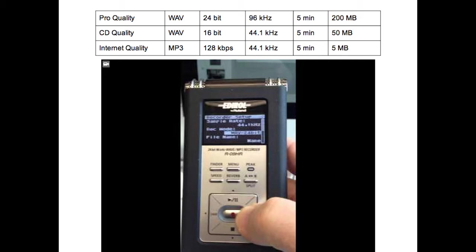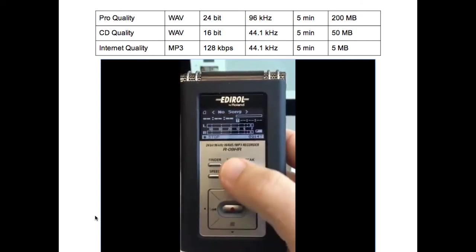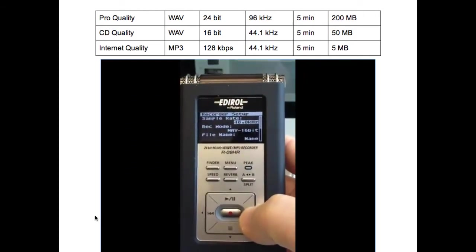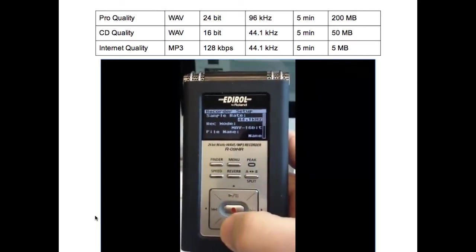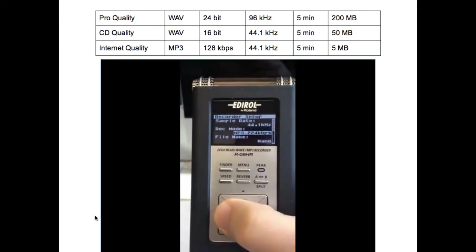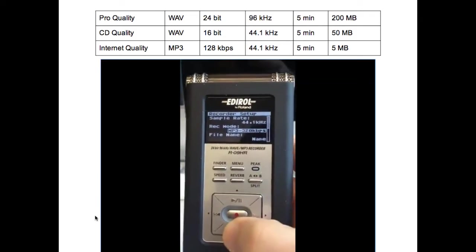And lastly, if you're looking for internet distribution where you want a smaller file, you'll end up having lower quality, but MP3 at 128 kb and 44 kHz — 5 minutes equals only 5 MB of data. Here's how to change the setting quality: go up to the menu item, then select recorder setting. You can adjust the kHz by pressing the right button or the left button to go down. To change the file format, click the right button to toggle back and forth between WAV and MP3. Then when you're done, press the menu button to get back to the recording level menu.